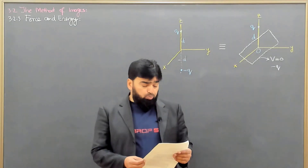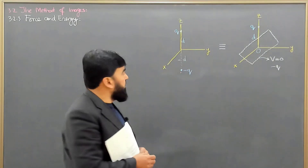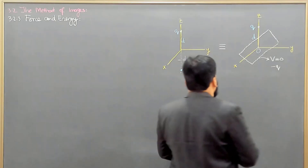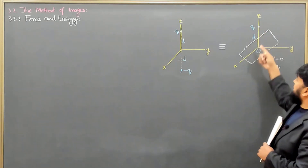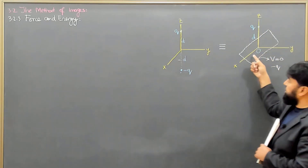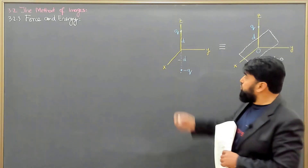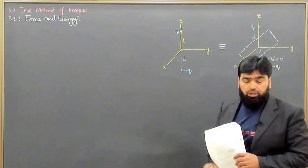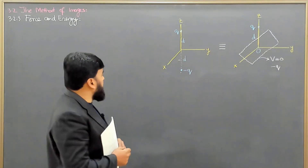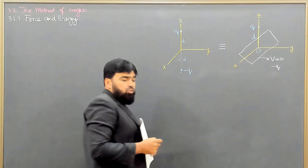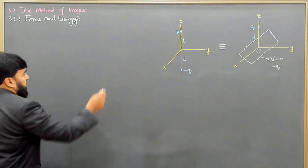In section 3.2.3 we will discuss the force and energy. We are having two configurations: one is a single charge and a conducting grounded sheet, and two is opposite charges at 2d distance apart from each other. We came to the result that the induced charge is exactly equal to minus q, which is on the sheet. Now we calculate the force between these two charges.